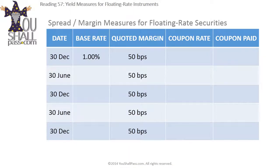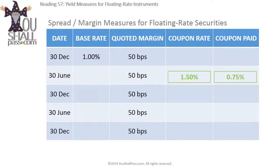For example, assume a bond was issued on 30th December with LIBOR as the base rate and a quoted margin of 50 basis points. If LIBOR on 30th December was 1%, the next coupon due on 30th June will be 1% plus 50 basis points, giving an annual coupon rate of 1.5%. Since it's semi-annual, the actual coupon paid is 75 basis points. On 30th June, if LIBOR is 1.2%, the next coupon due on 30th December will be 1.7% annual — that's 1.2% base rate plus 50 basis points quoted margin.